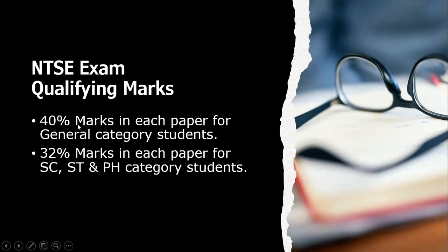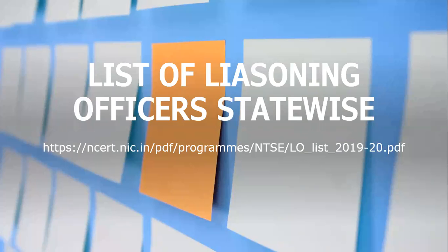The qualifying marks for the general category are at least 40 percent marks in each paper, and 32 percent if you belong to a reserved category — only then will you proceed to the national level. If you have problems getting the forms, you need to contact your Liaison Officer. That person will give you the application form and the link. I will share the relevant document with you after this.